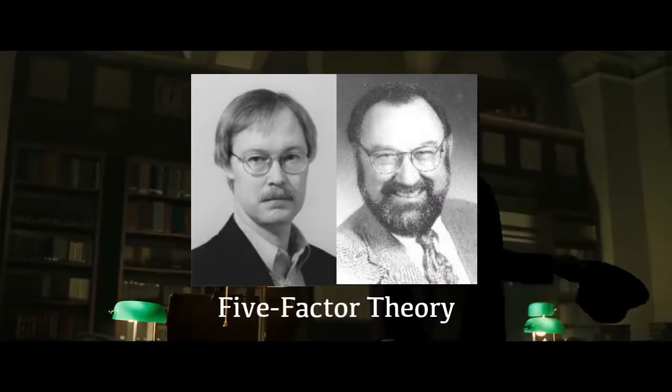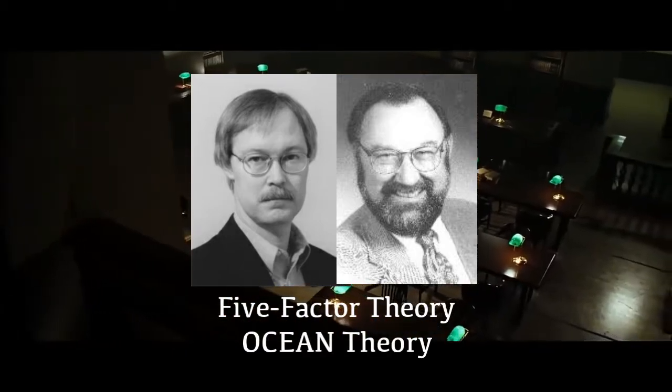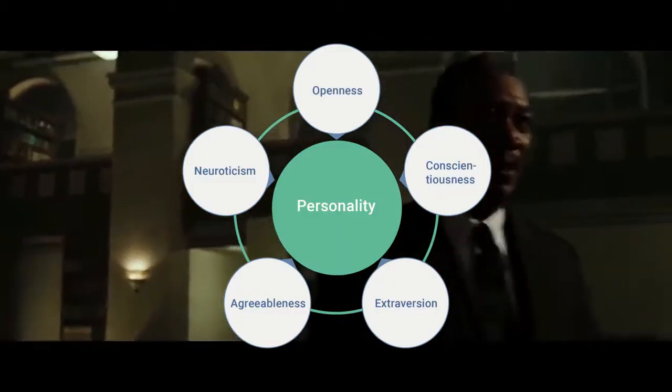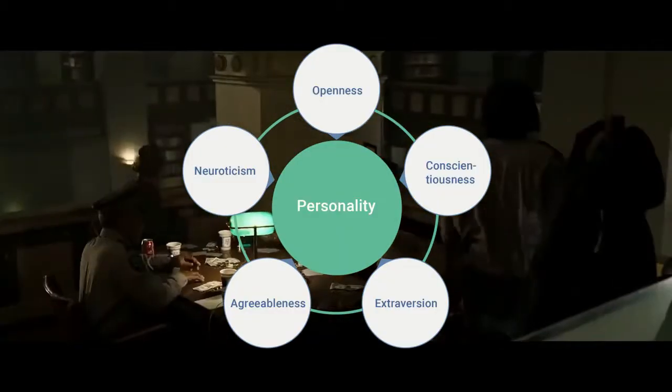We first take a look at McCrae's and Costa's Five-Factor Theory, also known as the OCEAN Theory, to look at John Doe. This theory is interested in the structure of personality, specifically with five universal traits that are consistent in individuals. Looking at John Doe, we can analyze and figure out how he would score with each of the Big Five factors.